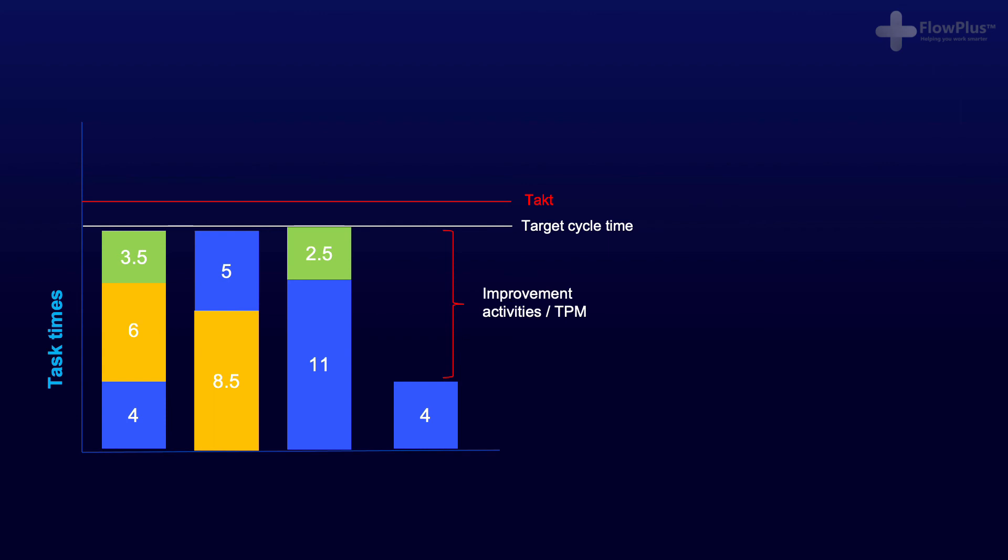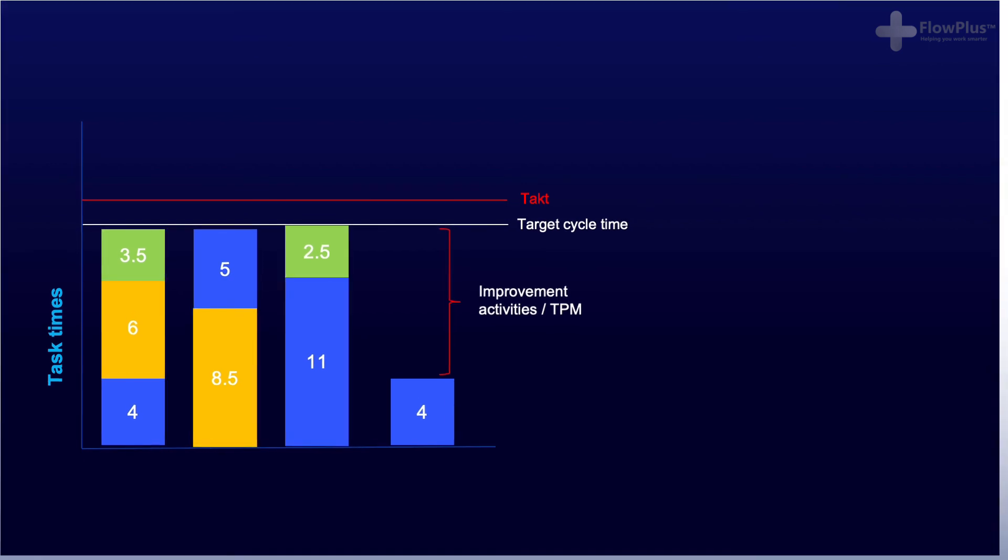The aim should always be for the MURA operator to make themselves not required by carrying out Kaizen continuous improvement activities. Once it reaches a point where they are not required within the process, they can then be redeployed elsewhere to add value in another process or in a different work cell.